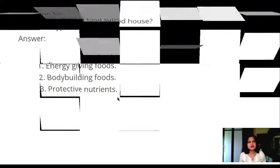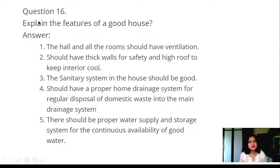Question 16: Explain the features of a good house. Answer: 1. The hall and all the rooms should have ventilation. 2. Should have thick walls for safety and high roof to keep interior cool. 3. The sanitary system in the house should be good. 4. Should have proper home drainage system for regular disposal of domestic waste into the main drainage system. 5. There should be proper water supply and storage system for continuous availability of good water.